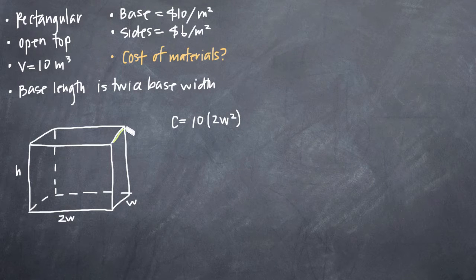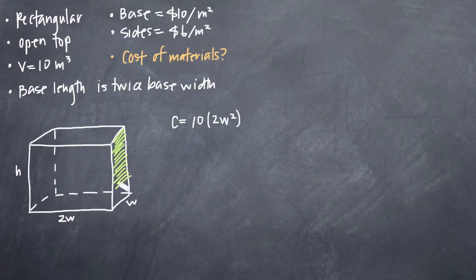We know that these sides here, the end of the rectangle or the thin side, the area of those will be w times h, right? The width times the height. And there's two of them. So we know that we have 2wh for those two sides.